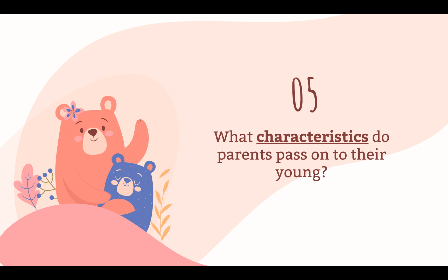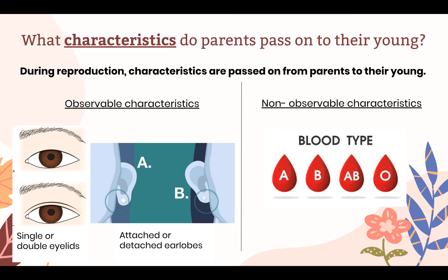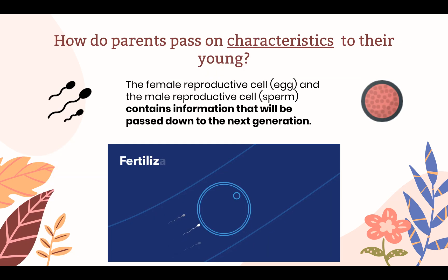Let's look at our next guiding question: what characteristics do parents pass on to their young? During reproduction, characteristics are passed on from parents to their young. Some characteristics that are easily observed are the types of earlobe and types of eyelids. The blood type is another example of a characteristic passed on from parents to their young; however, this characteristic cannot be observed. The female reproductive cell, the egg, and the male reproductive cell, the sperm, contain information that will be passed down to the next generation during fertilization, when the egg and the sperm fuse.